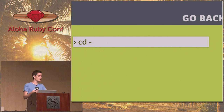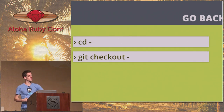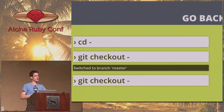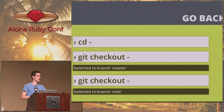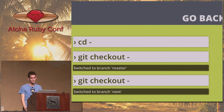cd - if you don't know this, it goes back to the previous directory you were in on the command line. Git has this concept too — you can just say git checkout - and it goes back to the branch you were previously on. You can go back and forth between master and next really easily.